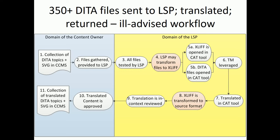In this workflow diagram, everything in the blue box is the content owner's domain and everything in the yellow box is the localization service provider's domain. Steps one and two: we collect all files and provide them to the LSP — essentially throwing them over the wall without much instruction. The LSP tests all files, then either transforms them into XLIF or opens them as DITA files to translate. They leverage translation memory, translate in a computer-aided translation tool, transform XLIF back to DITA, review in context, and hand it back. We then import the translated content back into our repository.